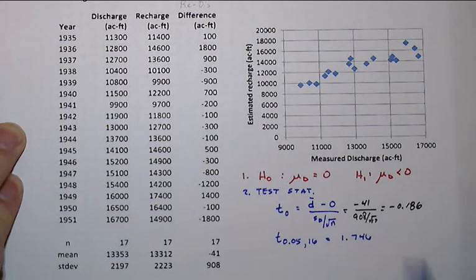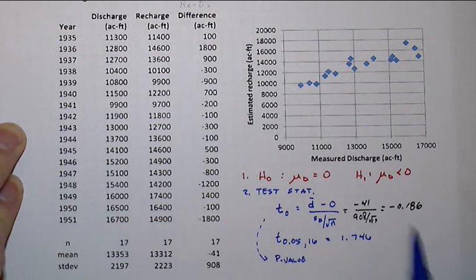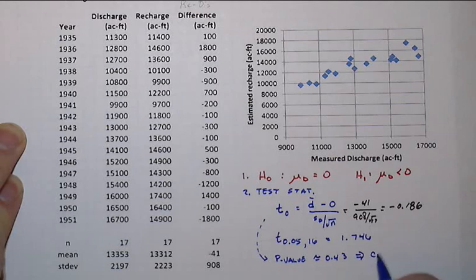And that number is 1.746. And, of course, we really care about the negative value here. And that's clearly that if you go and take a look at the p-value associated with the t-not value of minus 0.186, one-sided is about 0.43. And compared to the 5%, what that's telling us is that we cannot reject H-not at the 5% level.